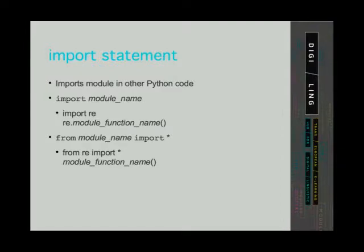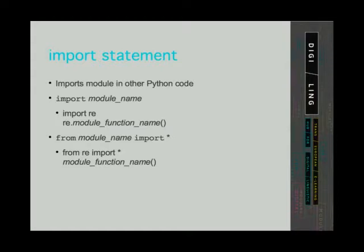Then, when we want to use functions described in this module, we have to write re — that is the name of the module — followed by a period, and then the name of the function. The other way is to write from, then re (the name of the module), then import, and then star. Instead of a star, we can write the name of the function or functions if we want to use only the stated ones. When we use this way of importing a module, we call the function just by writing the name of the function. We don't need to write re and period before the name of the function.